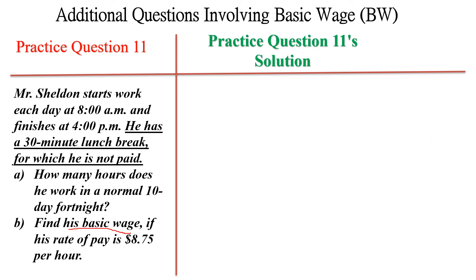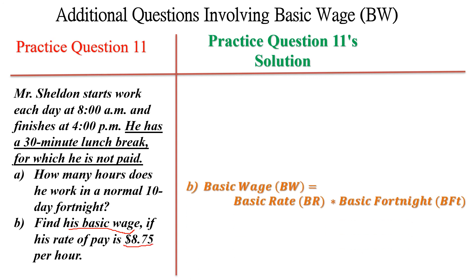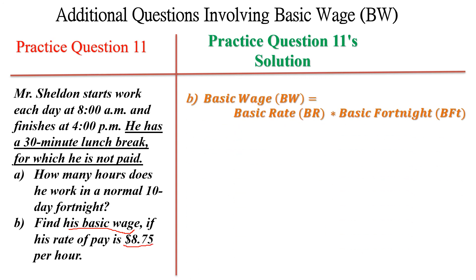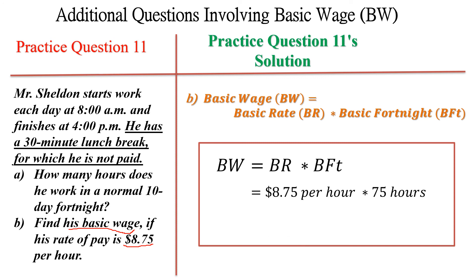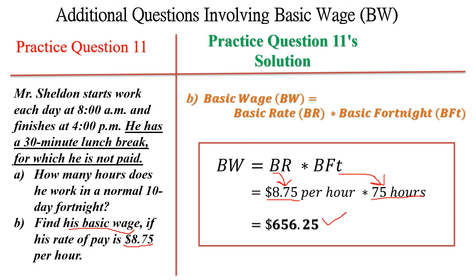Part B asks to find his basic wage if his basic rate of pay is $8.75 per hour. Basic wage equals basic rate times basic fortnight: $8.75 times 75 hours gives us $656.25. That is the basic wage for Mr. Sheldon.